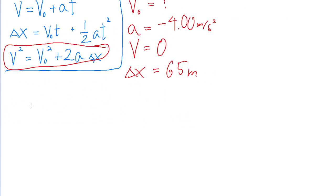We're going to take that equation and solve it for V0. First, we'll subtract 2a delta x from both sides of the equation. So V0 squared equals V squared minus 2a delta x.